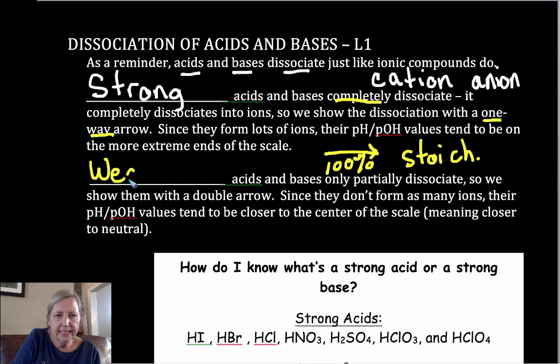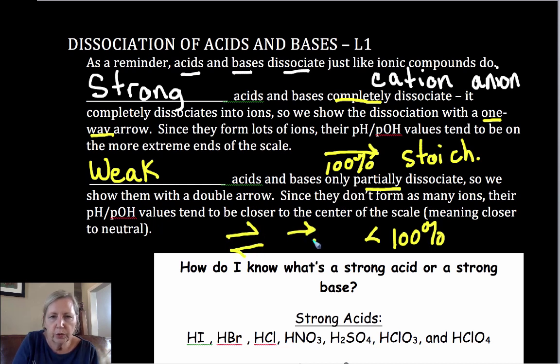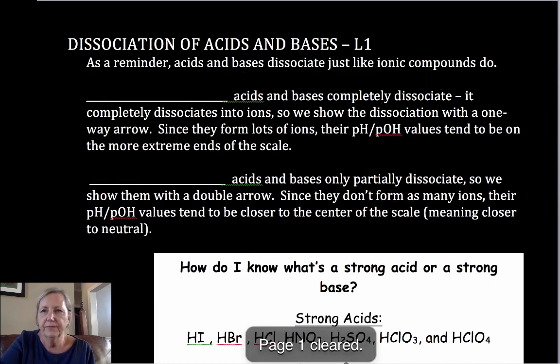Weak acids and bases only partially dissociate. They dissociate less than 100%. And so we'll use a double arrow, either two half arrows or two whole arrows. You see it a variety of ways. They don't form as many ions because they don't go as far to form product. In the reactant stage, they stay molecular, which they don't form ions. So we will talk about that in terms of their acid-base strength as we move through this series of videos.